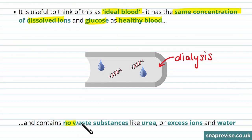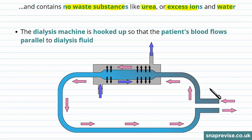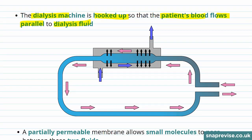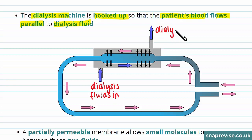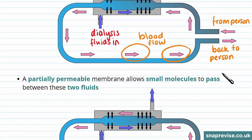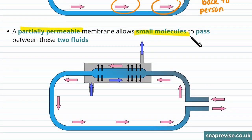The dialysis fluid also contains no waste substances like urea, excess ions, or water. The dialysis machine is hooked up so that the patient's blood flows parallel to the dialysis fluid. In the diagram: this arrow represents dialysis fluid going in, this arrow represents dialysis fluid going out, and the pink arrows represent the flow of blood — flowing from the person and back to the person. A partially permeable membrane allows small molecules to pass between the dialysis fluid and the blood.